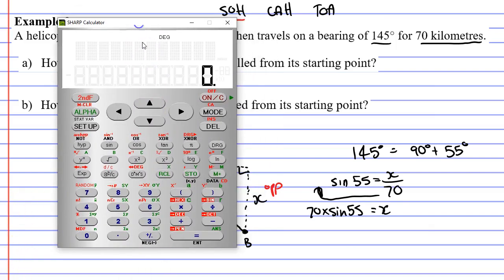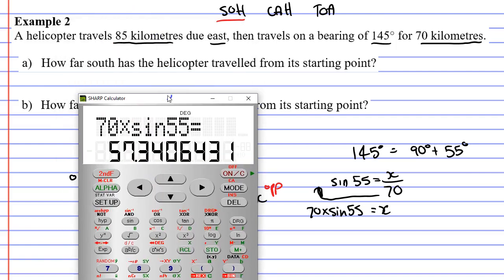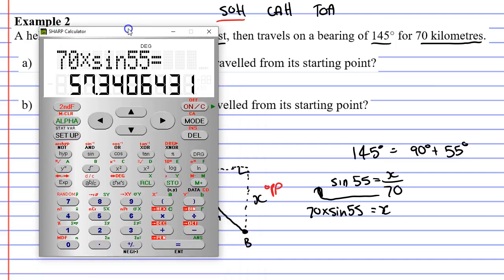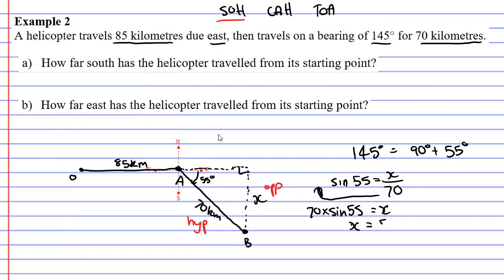Let's bring up our calculator. Checking that it's in degrees. 70 times sine 55 equals and we get 57.34. Now it hasn't told us how to do any rounding, so I'm just going to do it to the nearest kilometer. So let's just say 57. X equals 57 kilometers. We did that to zero decimal places.